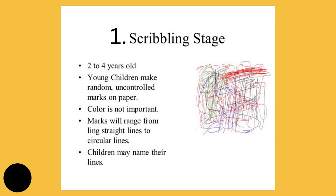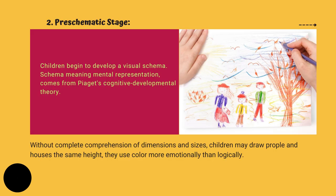In the scribbling stage, young children make random and uncontrolled marks on paper. Color is not important, and marks will range from straight lines to circular lines. Children may name their lines. In the pre-schematic stage, children begin to develop visual schema — schema meaning mental representation. This comes from Piaget's cognitive developmental theory. Without complete comprehension of dimensions and size, children may draw people and houses the same height. They use color more emotionally than logically.